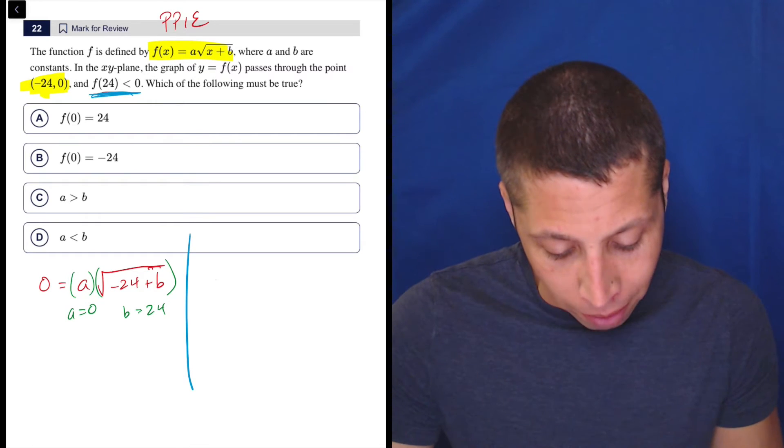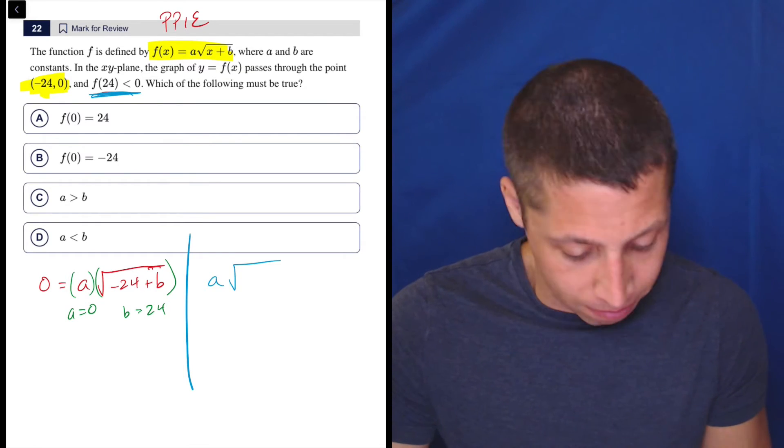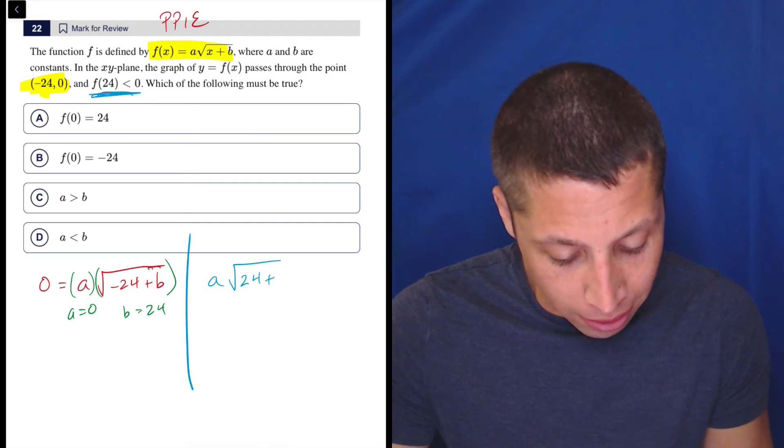So all right, let's just do that. So A times the square root of 24 plus B has to be less than 0.